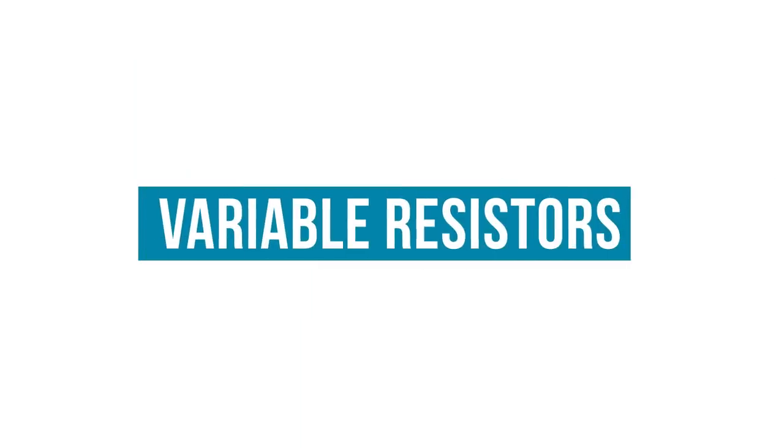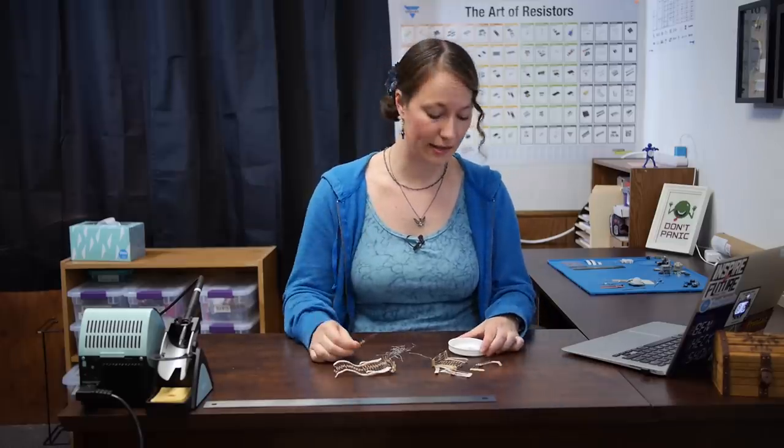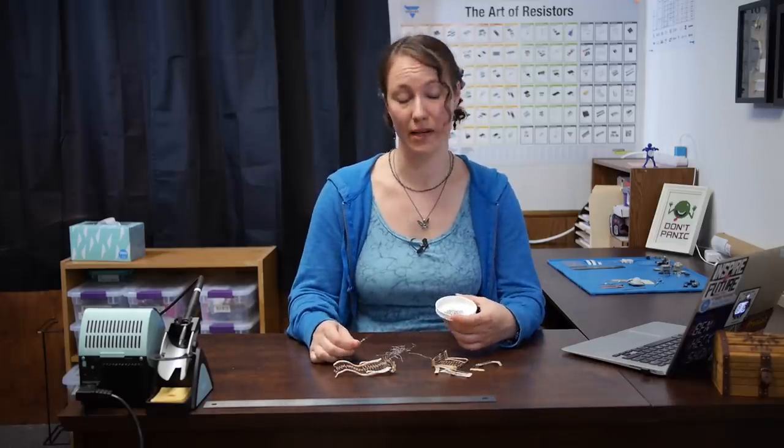When most people think of resistors, this is usually what comes to mind. They either look like this with leads, or like this on our surface mount. These are fixed value resistors, but not all resistors have a fixed value. Some are variable. Most variable resistors have a maximum resistance, and can be adjusted to have a resistance between zero or near zero, and their maximum resistance.